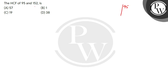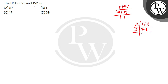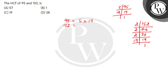So let's do 95 prime factorization. 95 prime factorization is 5 into 19, and 152 prime factorization is 2 into 2 into 19.